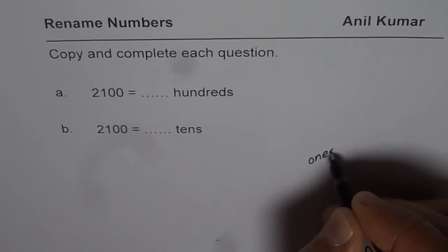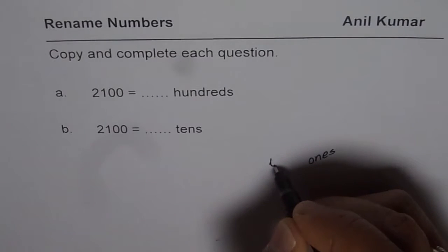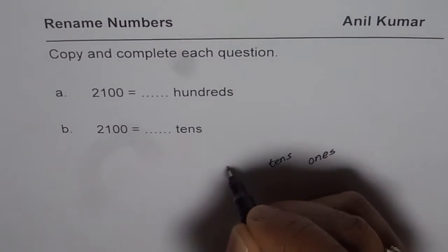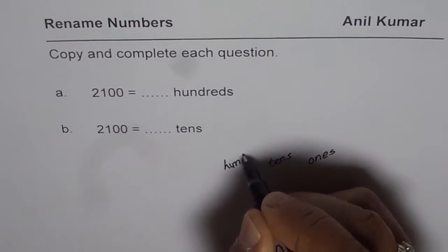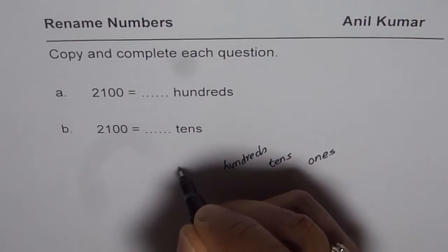So let's say we have ones on the rightmost side then we have tens, hundreds and thousands.